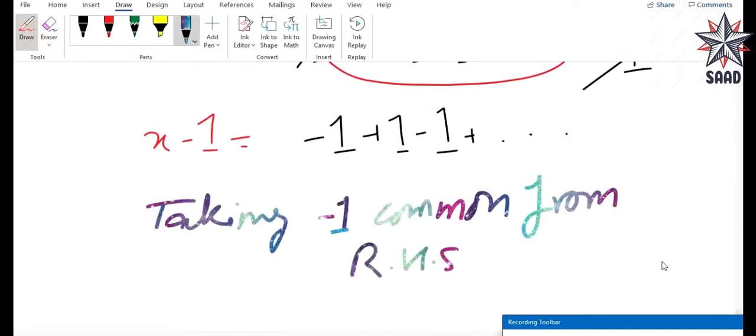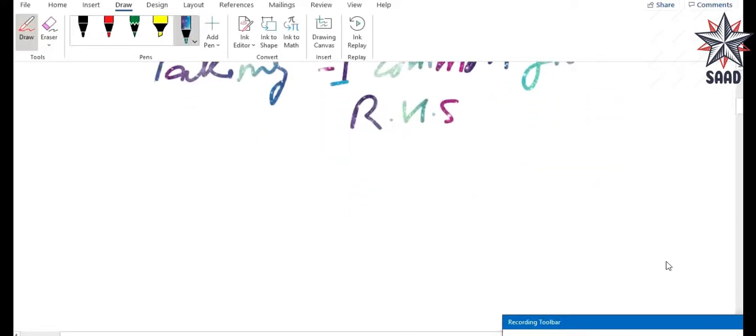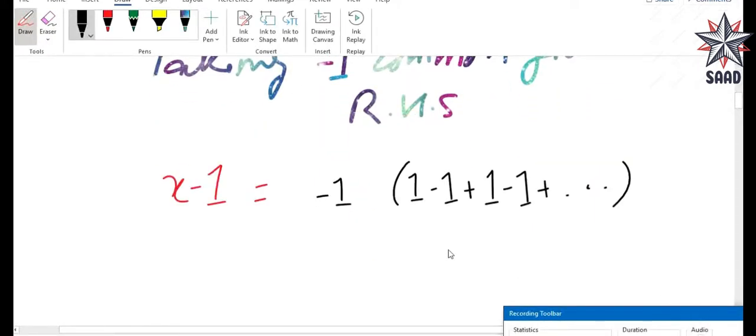Taking minus 1 common from the right hand side of the equation will give us this. So you can see that here, we have 1, minus 1, plus 1, minus 1, plus and so on till infinity.